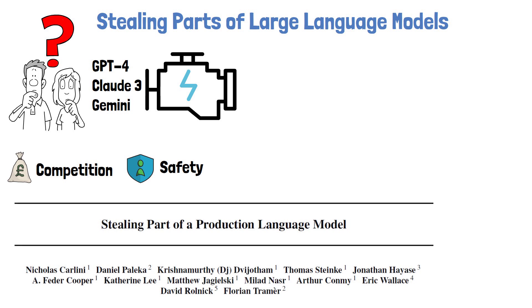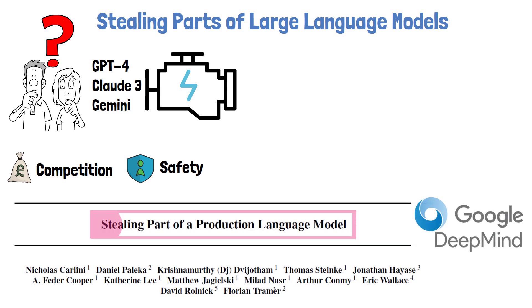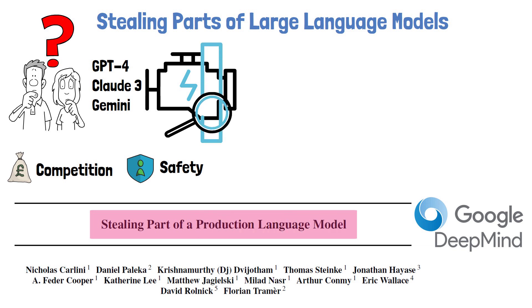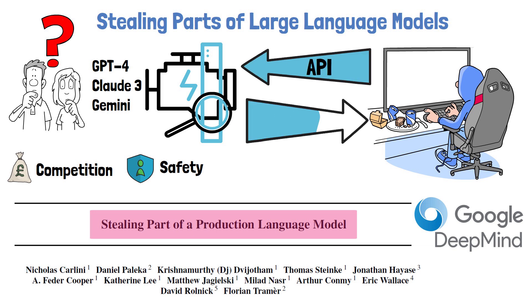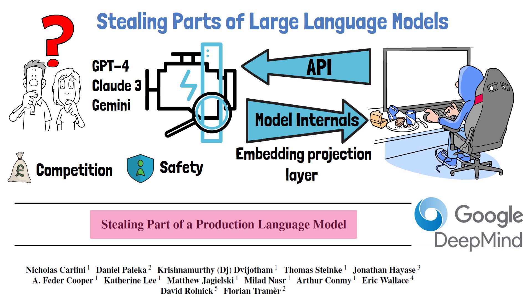In this video we study a recent research paper with authors from Google DeepMind titled 'Stealing Part of a Production Language Model', which presents a model stealing attack that extracts internal information from black box language models. The attack is performed via standard API access, where the attacker uses the API to get internal data about the model. Specifically, the internal data being stolen is the embedding projection layer, the last layer of the model, and the researchers estimate it would cost under $2000 in queries to retrieve the embedding projection layer of GPT-3.5 Turbo.